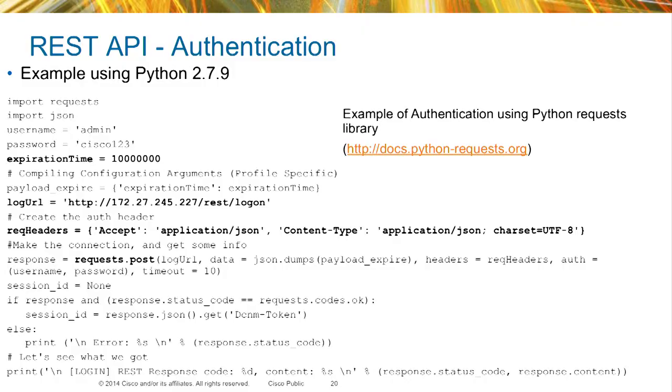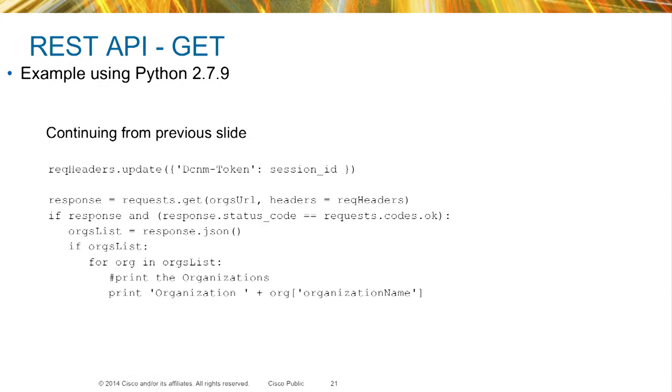You don't have to do it manually — you could do it programmatically, or use our GUI, our UCSD, and do all those things automatically with an easy button. Here is a Python script using Python 2.7 — that's all you need to download on your Windows machine or Mac. You could run this basic script, which will allow you to create and also print out the profiles that are in your DCNM. We also have other sample codes in our GitHub portal. This is a continuation of the Python script where we display the different organizations configured inside our DCNM.